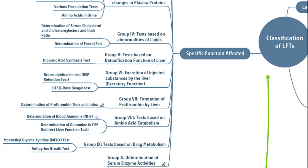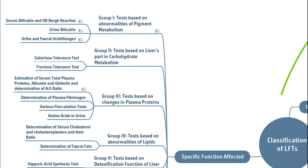The classification based on specific function affected has 10 groups, and we recommend you to study this classification only, because in the exam marks will be divided accordingly. This classification is recommended because it includes additional miscellaneous tests such as galactose tolerance test and fructose tolerance test, which are not covered under the previous two classifications.